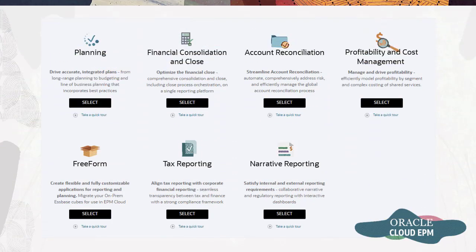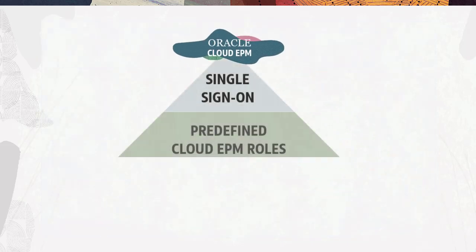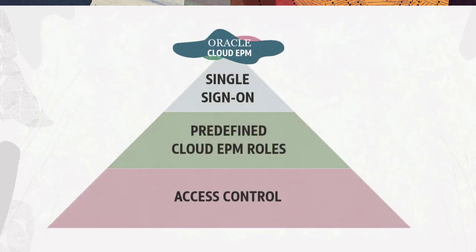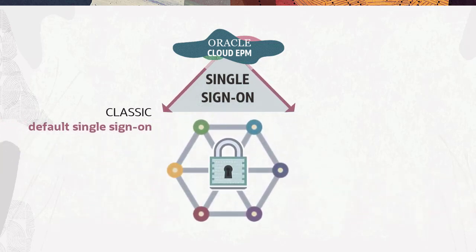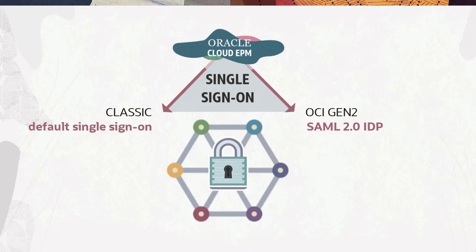In Oracle Fusion Cloud Enterprise Performance Management, you implement security in several layers. You can use the default Oracle Cloud EPM single sign-on, or use a Security Assertion Markup Language 2.0 compliant identity provider to authenticate users to multiple cloud EPM services.